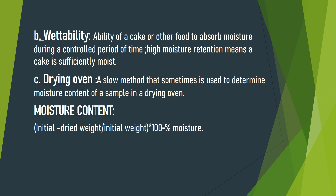Wetability is the ability of a cake or other food to absorb moisture during a controlled period of time; high moisture retention means a cake is sufficiently moist. A slow method sometimes used to determine moisture content is the drying oven. The formula involves taking an initial reading, subtracting the dried weight, dividing by the initial weight, and multiplying by 100 to give the moisture percentage.